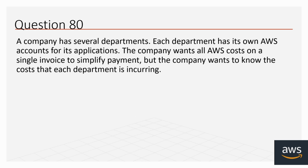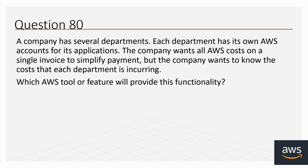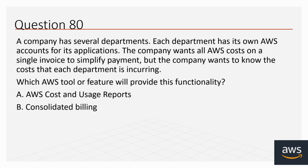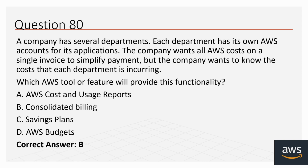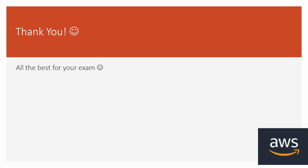Question 80: A company has several departments, each with its own AWS account. The company wants all AWS costs on a single invoice to simplify payment, but also wants to know the cost each department is incurring. Which AWS tool or feature will provide this functionality? Options: AWS Cost and Usage Reports, Consolidated Billing, Savings Plan, AWS Budgets. The correct option is Consolidated Billing.